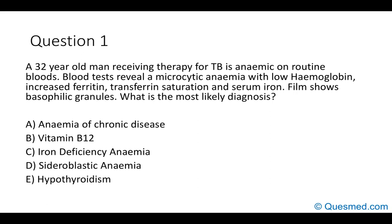This is the first question. The answer here is sideroblastic anemia. You have a 32-year-old man who's receiving therapy for tuberculosis — that's the first clue. He has a microcytic anemia with an increased ferritin, transferrin saturation, and serum iron. The most common cause of a microcytic anemia is iron deficiency anemia, but the increased ferritin doesn't fit with iron deficiency anemia, so it should be something else.